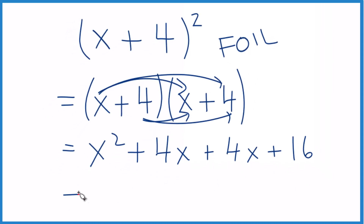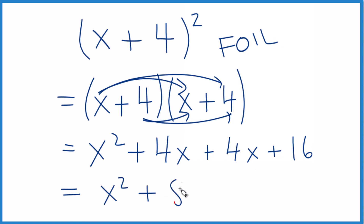Now we can combine these together. We have our x squared, and then we have 4x and 4x — we add those together and get 8x — and then we have 16. So when we expand and simplify x plus 4 squared, we get x squared plus 8x plus 16.